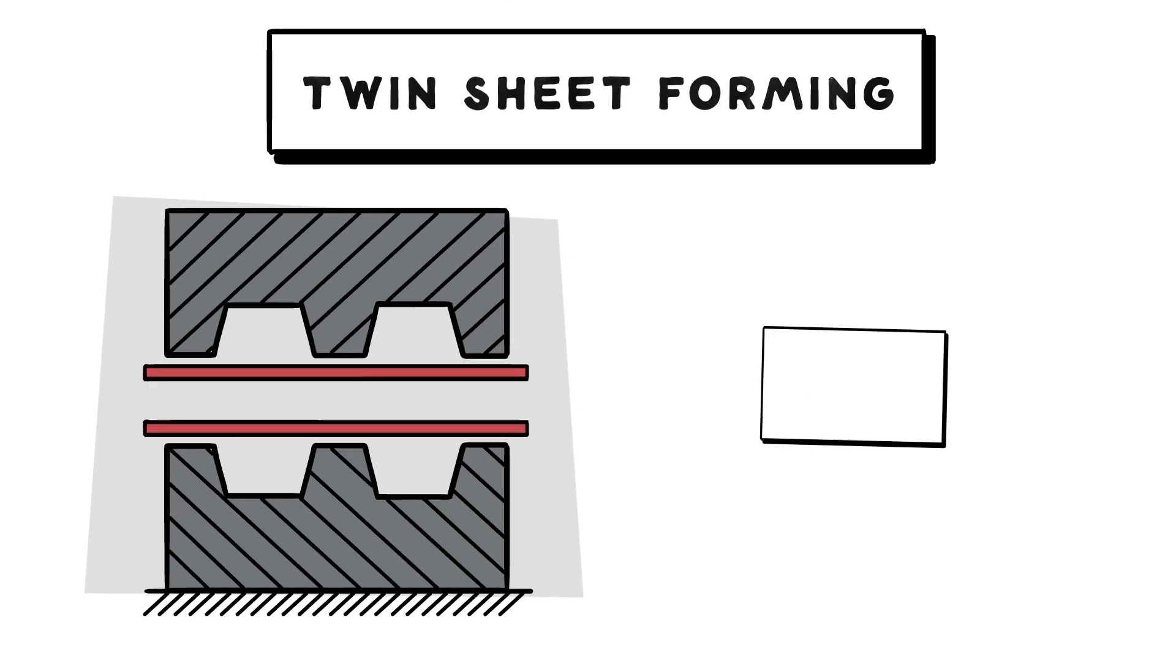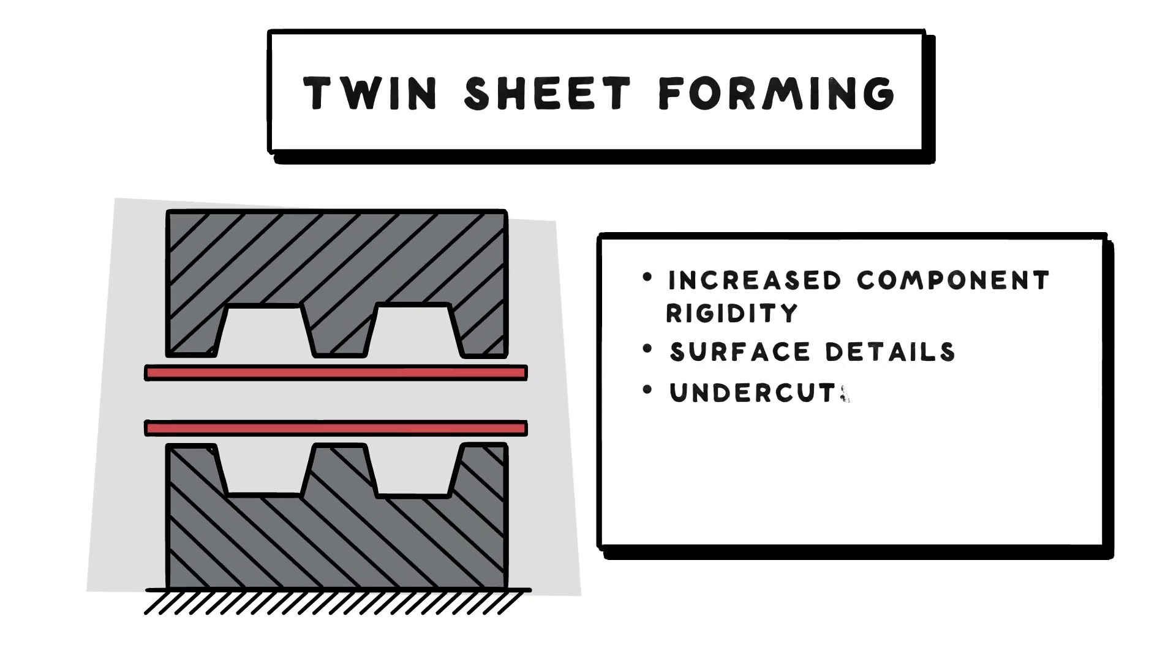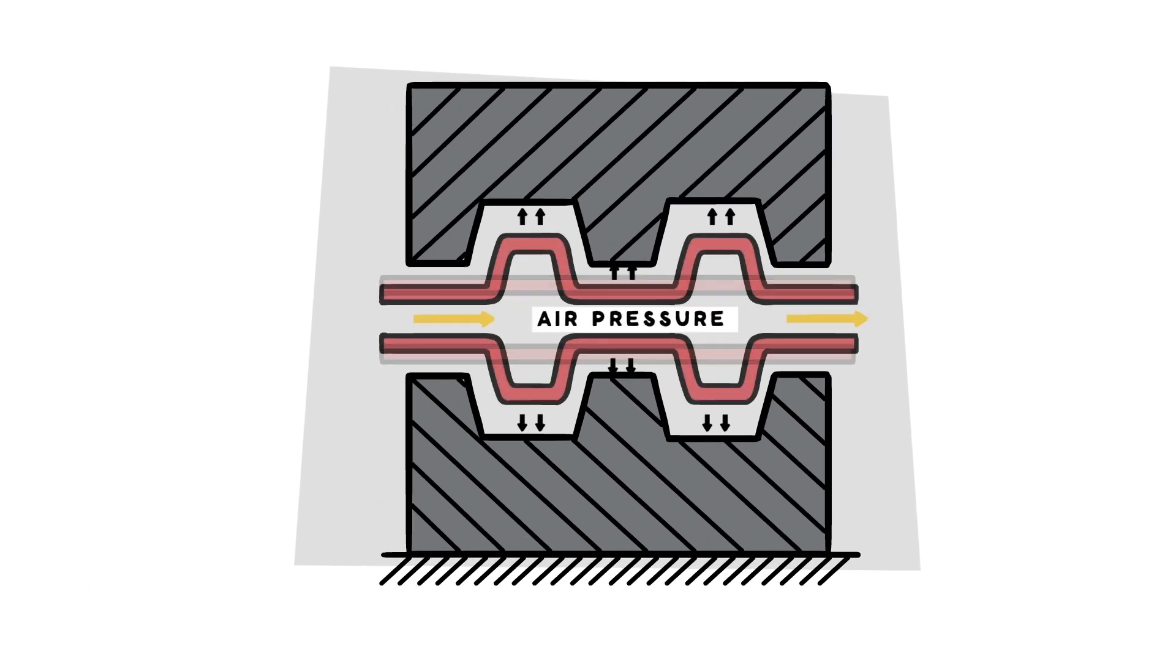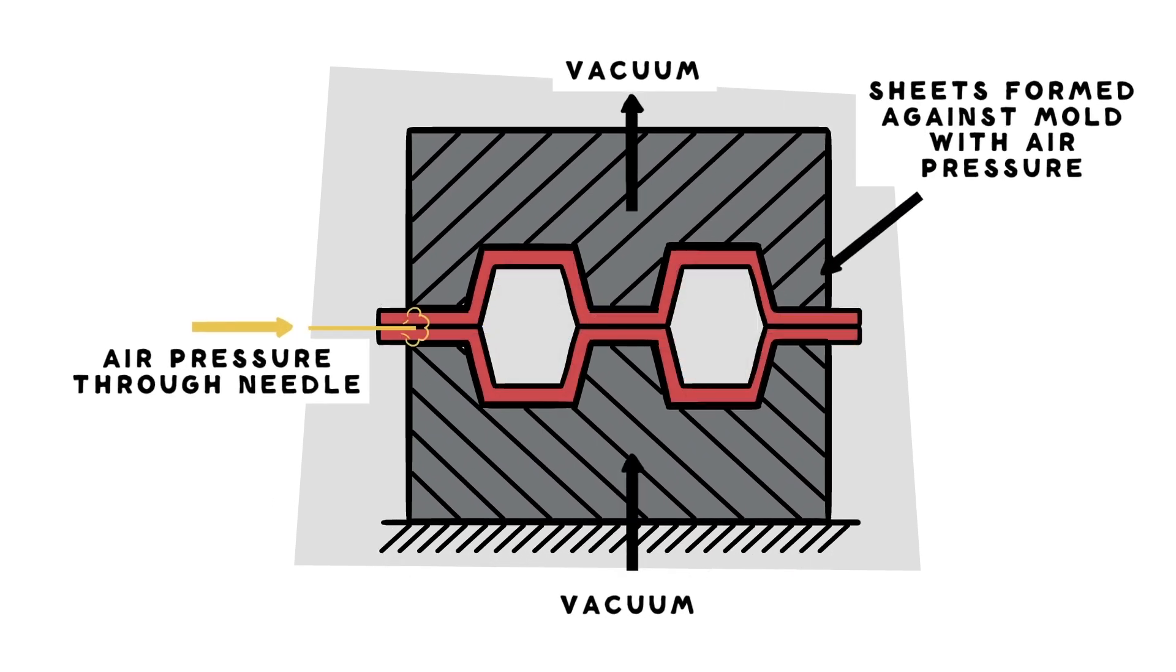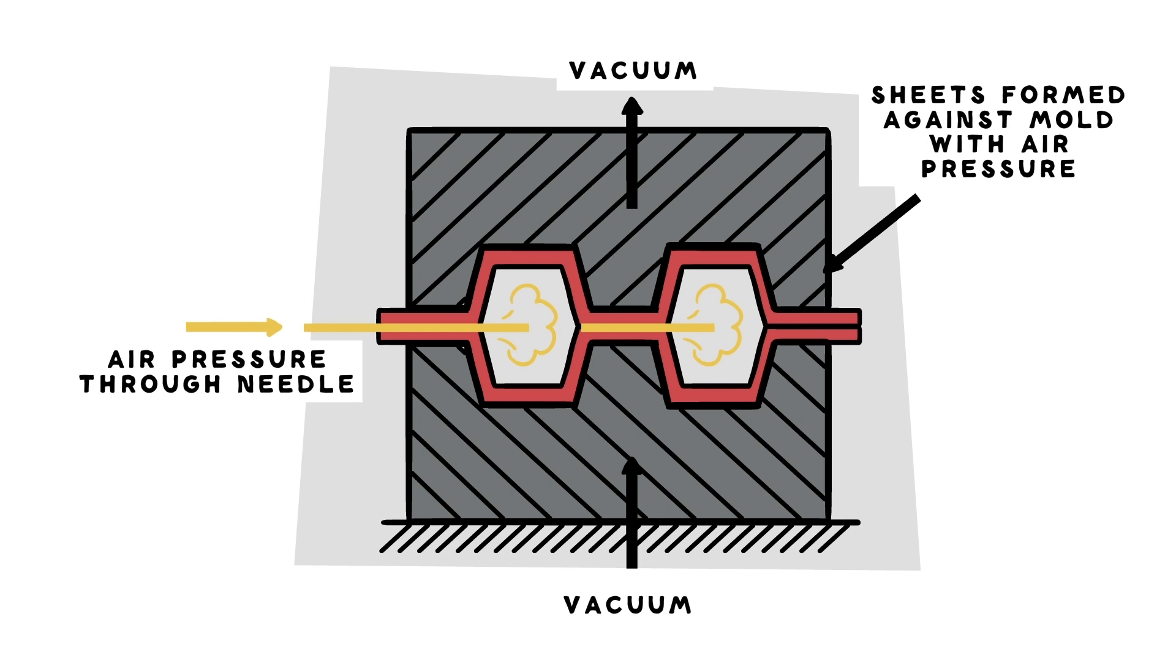Twin sheet forming bonds two thermoplastic sheets together to provide additional structural support and rigidity. This process uses vacuum airflow on the top and bottom. It could utilize internal air pressure or structural foam.